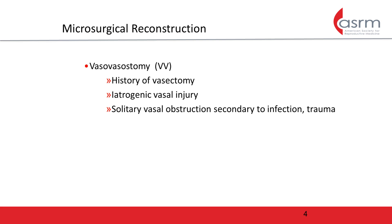The two methods of microsurgical reconstruction for obstructive azoospermia include vasovasostomy, abbreviated as VV, and vasoepididymostomy, abbreviated as VE. VV is appropriate for patients with a history of vasectomy, iatrogenic vasal injury from either inguinal or scrotal surgery, or a solitary vasal obstruction from infection or trauma.